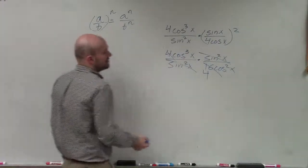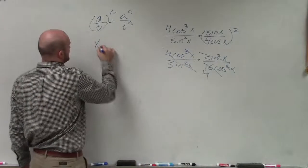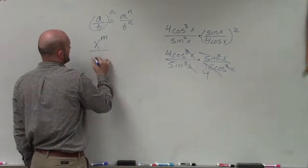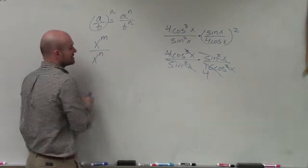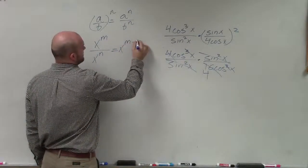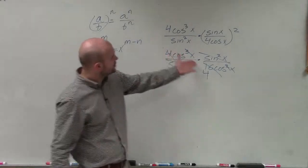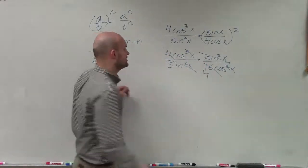Well, cosine cubed divided by cosine squared, we subtract our fractions just like if we were doing x to the m divided by x to the n. Remember our exponent, our power rules, that just tells us x to the m minus n. So if we have cosine cubed divided by cosine squared, that's just going to leave us with cosine.